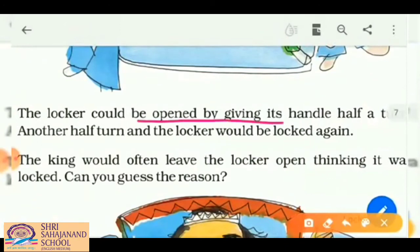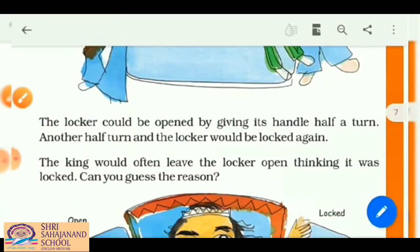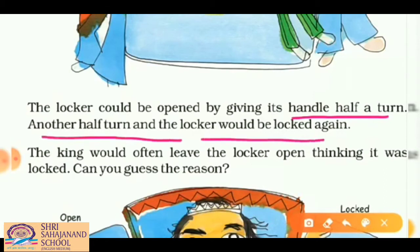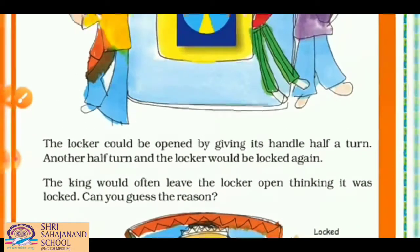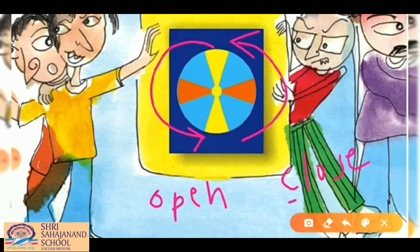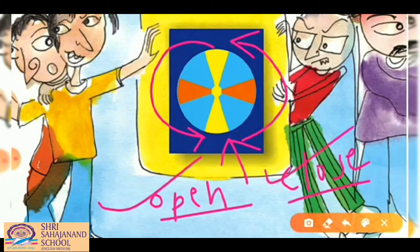The locker could be opened by giving its handle a half turn, and then another half turn would lock it again. It's confusing because if you take a half turn, it opens; another half turn closes it. By just looking at the picture, you can't tell if the locker is open or closed, because there is no identification.